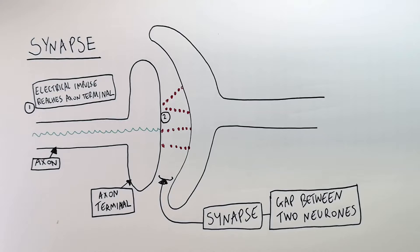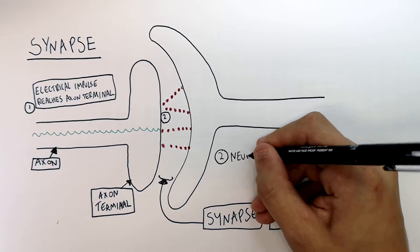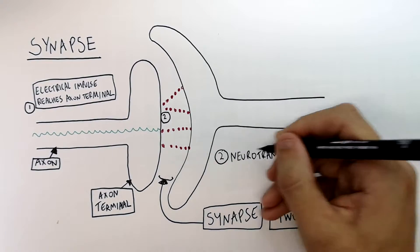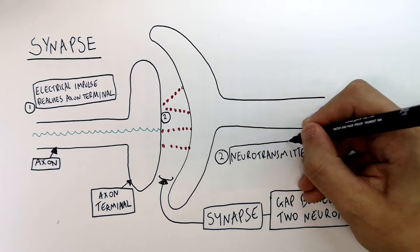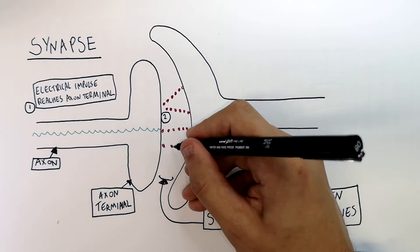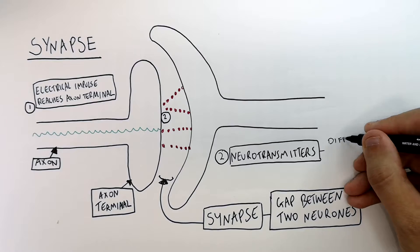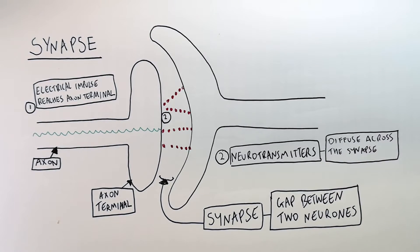Now you can see the neurotransmitters here. Step number two is where neurotransmitters diffuse across the synapse. It is not an electrical impulse — it is chemicals called neurotransmitters that diffuse across the synapse.